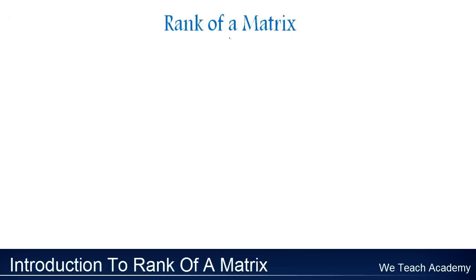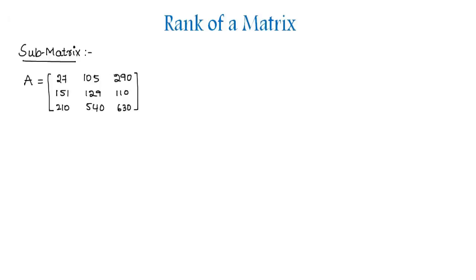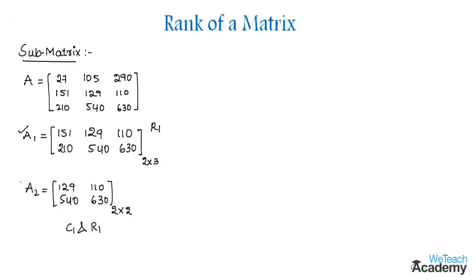Before going to rank, let us discuss about sub-matrix. The matrix obtained by deleting some rows or columns of a matrix is called a sub-matrix of a given matrix. For example, sub-matrix A1 is obtained by deleting the first row R1, and its order is 2 by 3. Similarly, sub-matrix A2 of order 2 by 2 is obtained by deleting the first column C1 and the first row R1. So matrices A1 and A2 are called sub-matrices of the given matrix A.